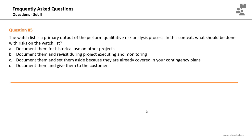Question number five. The watch list is a primary output of the perform qualitative risk analysis process. What should be done with risks on the watch list? The watch list is a risk register update resulting from the perform qualitative risk analysis process and includes all risks with low probability or low impact. These risks are not moved forward to quantitative risk analysis or the plan risk responses process.